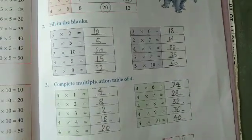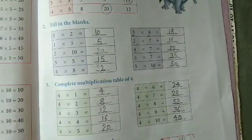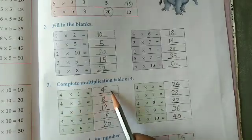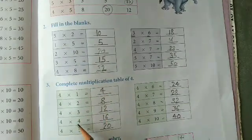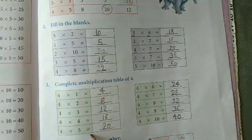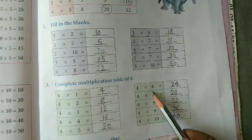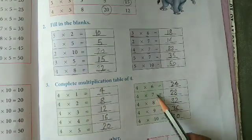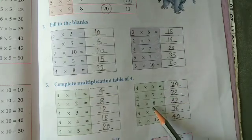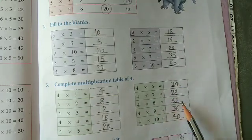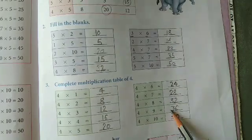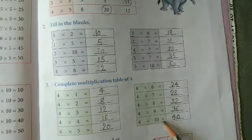Next, complete the multiplication table of 4. 4 ones are 4, 4 twos are 8, 4 threes are 12, 4 fours are 16, 4 fives are 20, 4 sixes are 24, 4 sevens are 28, 4 eights are 32, 4 nines are 36, 4 tens are 40.